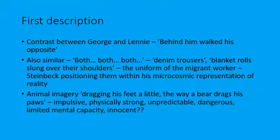One of the first things you'll notice is the contrast between George and Lennie. George is described as quite small with very defined features, whereas Lennie is described as shapeless of face and huge physically. It actually says 'behind him walked his opposite,' so the two characters are very much portrayed as opposites. Interestingly, just before that, Steinbeck emphasises how similar they are.